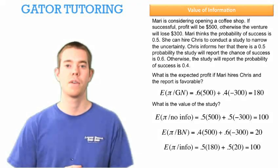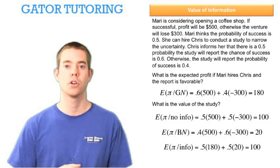So the expected profit with information, how often are we going to get good news? 50% of the time. So 50% of the time we get a good report, and we expect to make $180. 50% of the time we get a bad report, and we expect to make $20. So the expected profit given information is $100.